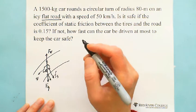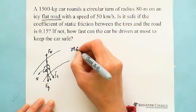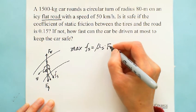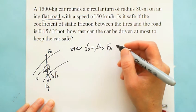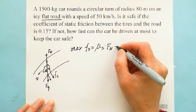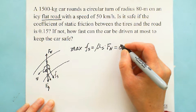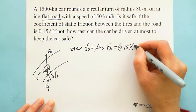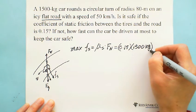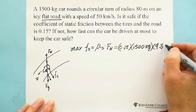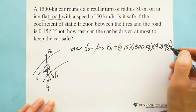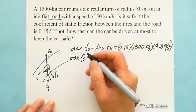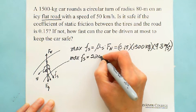So the velocity, right? First we calculate the maximum static friction. The formula is μₛ times normal force. In this situation, normal force equals gravity. That's why we can do 0.15 times normal force equals mg, which is 1500 kg times 9.8 m/s². So this gives us the maximum static friction. We got, after calculation, we got 2205 N.